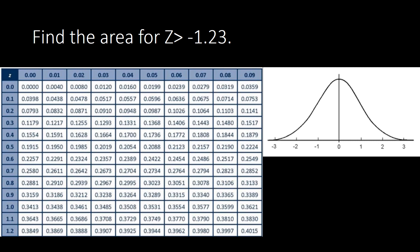Hello, once again this is your teacher Jenny. Join me here for another discussion on finding the area under the normal curve or normal distribution. We have: find the area for z greater than negative 1.23. If we illustrate that on the normal curve, negative 1.23 is on the left side of zero, the center or the mean.